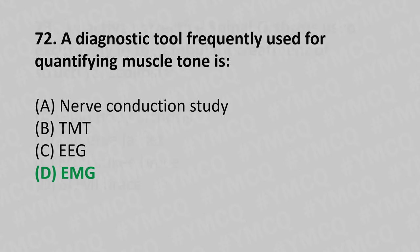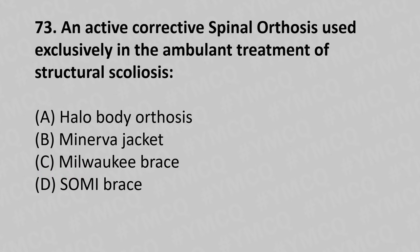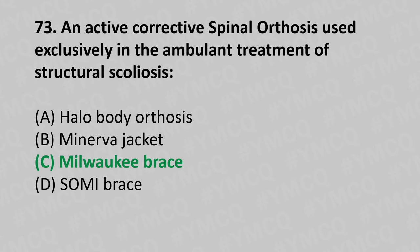Moving to our 73rd question. An active corrective spinal orthosis used exclusively in ambulant treatment of structural scoliosis: Option A, Hollow body orthosis; Option B, Minerva jacket; Option C, Milwaukee brace; Option D, SOMI brace. And the answer is Option C, Milwaukee brace.